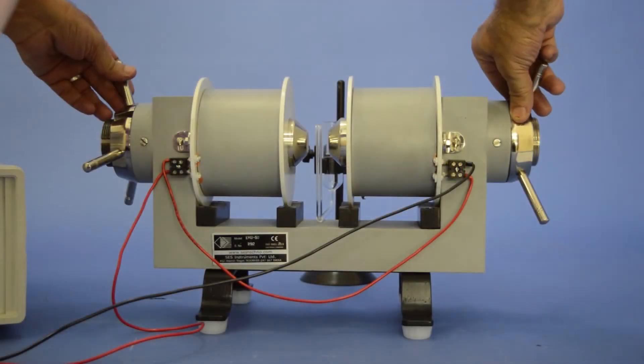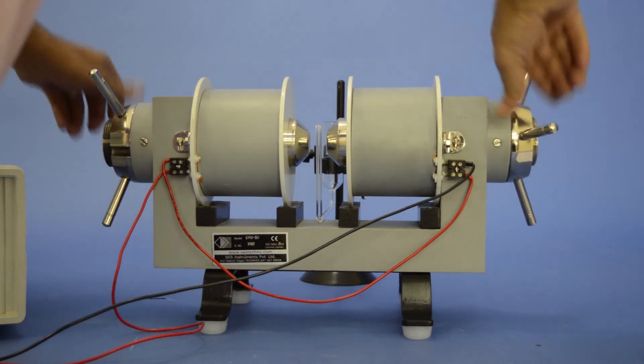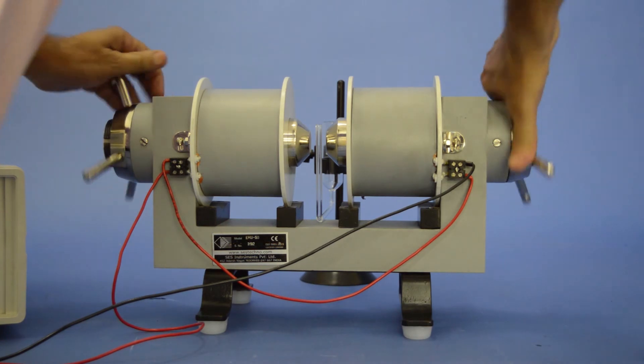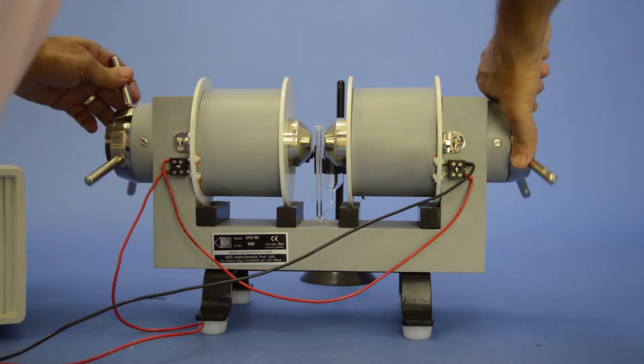Set the air gap between the pole pieces by placing the Kuhn's tube between the pole pieces. The air gap should be set to minimum possible.